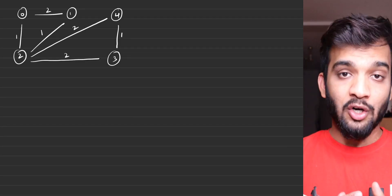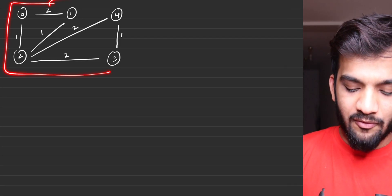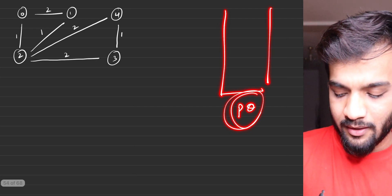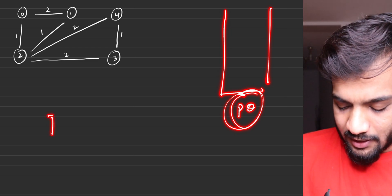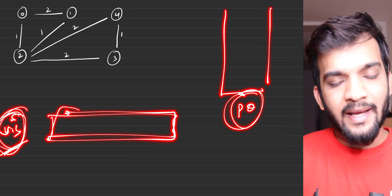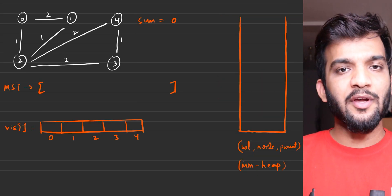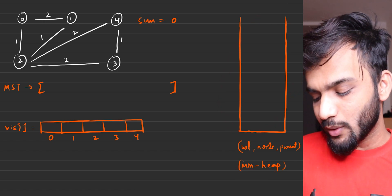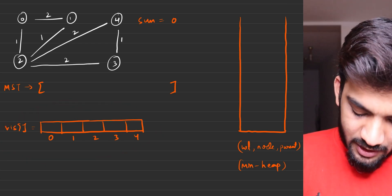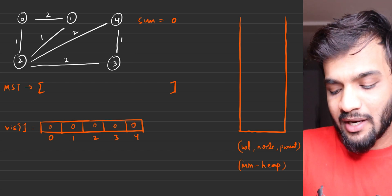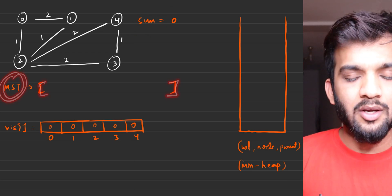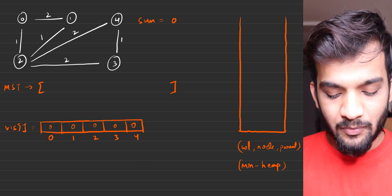To understand Prim's algorithm we'll use this particular graph. Before starting, we'll need a couple of things: one is a priority queue (minimum heap), and the other is a visited array. The initial configuration will have a priority queue storing the weight, the node, and the parent. The visited array will be initially marked as unvisited for all nodes. We'll also maintain a sum of zero to count the MST's edge weight and an MST list storing all edges that are part of the MST.